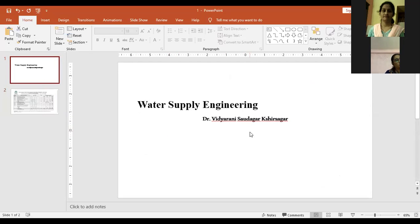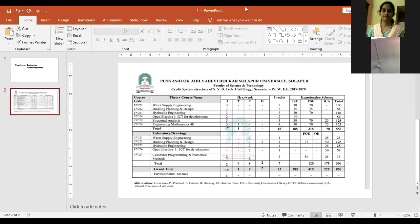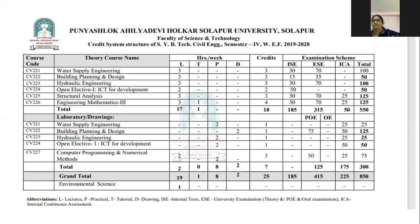You are going to study the subject water supply engineering. I will display a structure — with this structure you will be able to see. In this structure, you can see the course code CV. I think the class coordinator might have shown this structure to you; if not, you can go through this. In this semester, you are going to study five or six theoretical subjects.